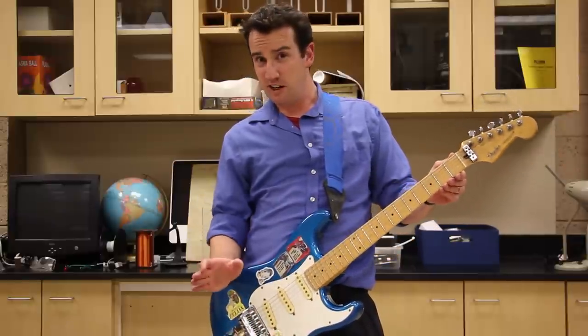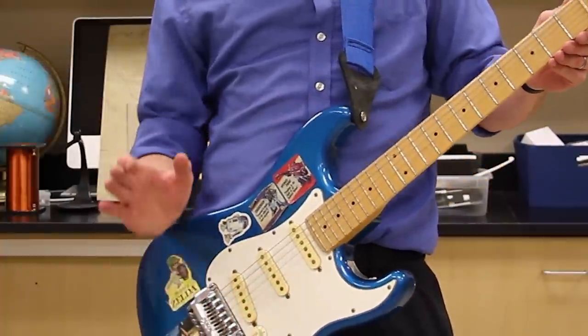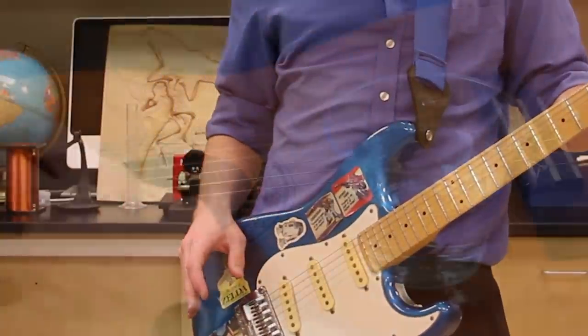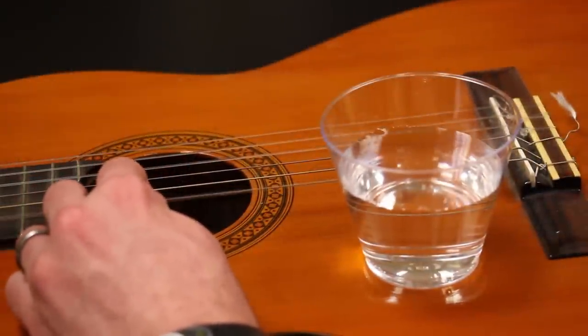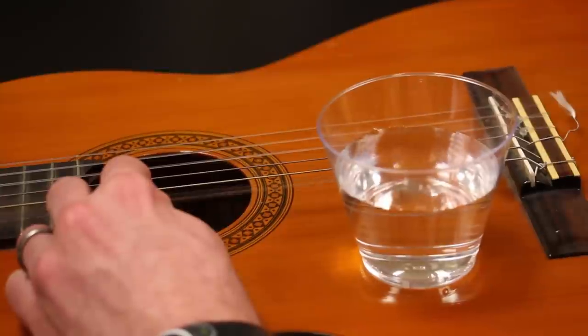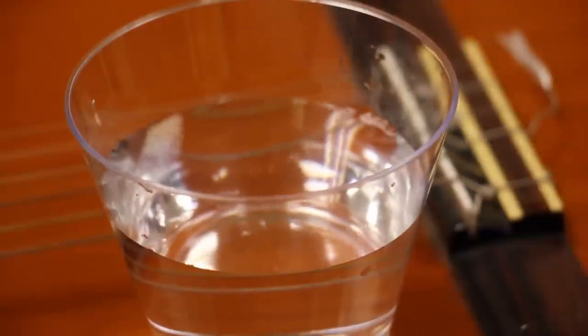That is because the string does not waste its energy vibrating the body of the guitar in order to make the sound. A regular acoustic guitar's entire body vibrates in the air when you pluck a string. And this does not happen as much with the electric guitar. The body is solid, heavy, and doesn't vibrate much.